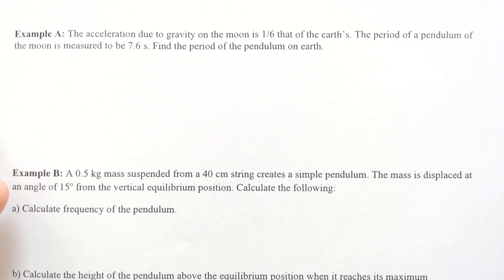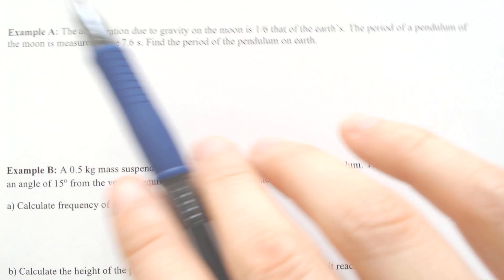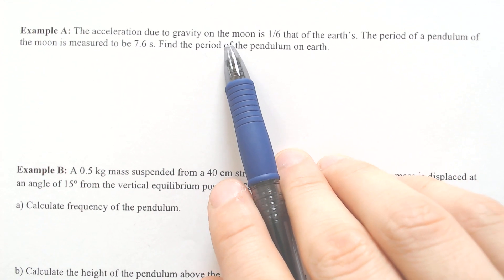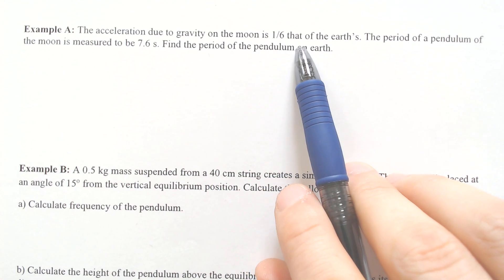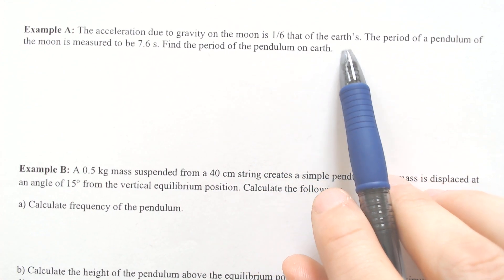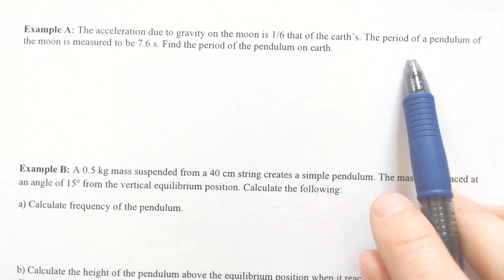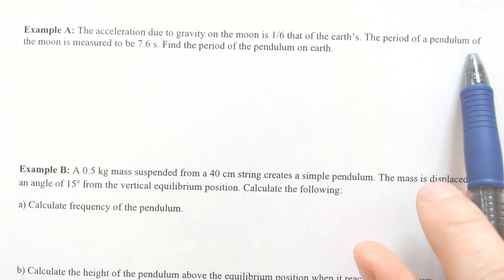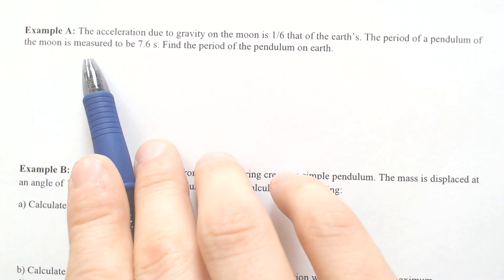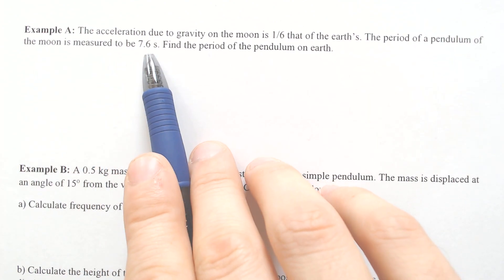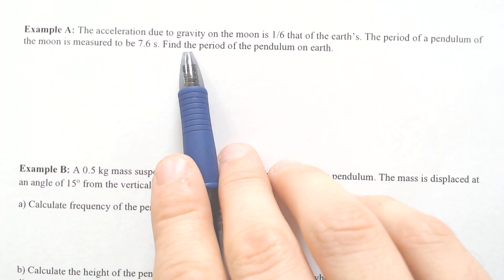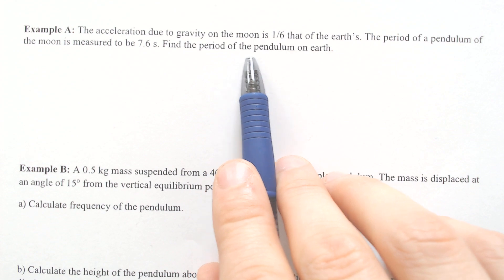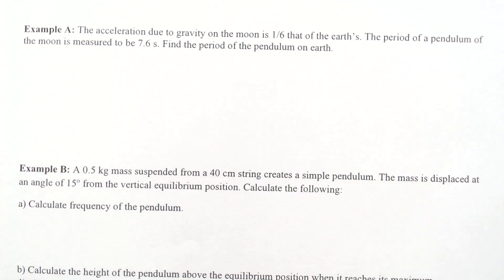We've got a good variety of examples, some of which are easy and some of which are hard. The acceleration due to gravity on the moon is one-sixth that of Earth. The period of the pendulum on the moon is measured to be 7.6. Find the period of the pendulum on Earth.